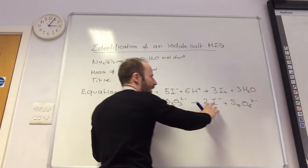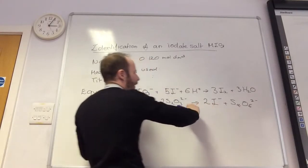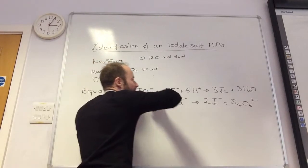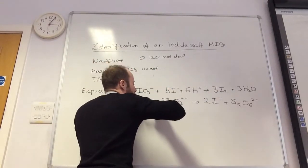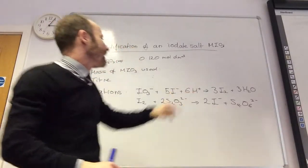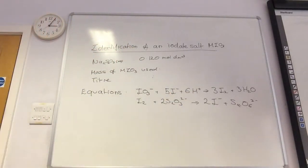Iodine with thiosulfate, which is iodide ions, forms S4O6 2-. And I've generated the iodine by reacting iodate with acid and iodide ions.